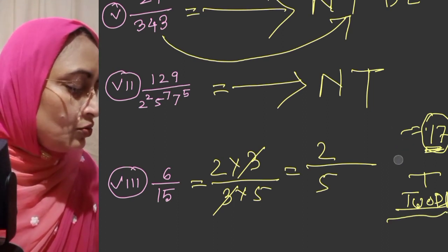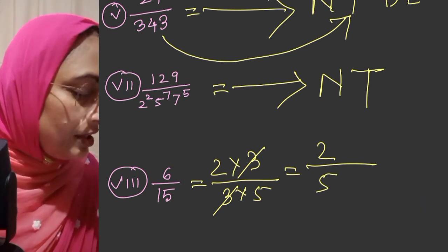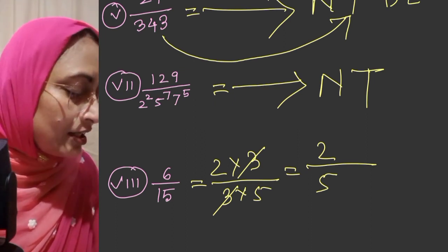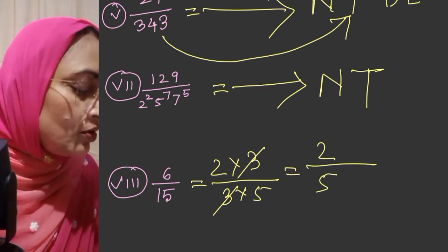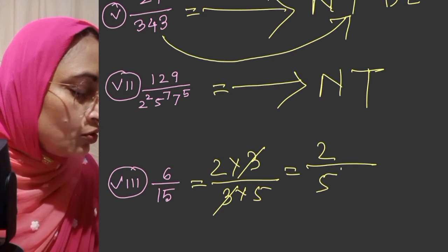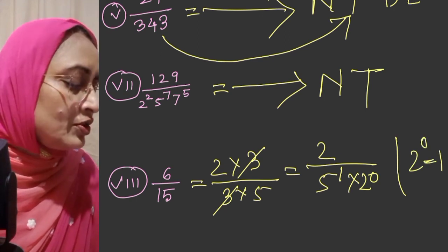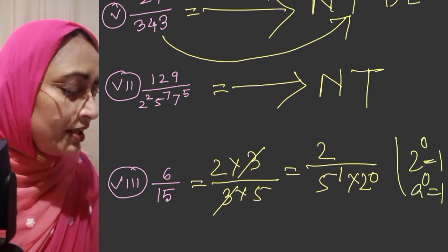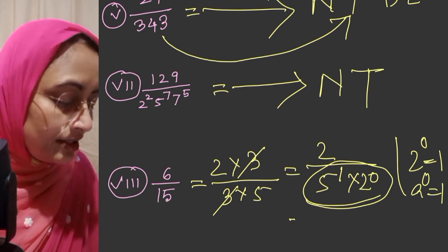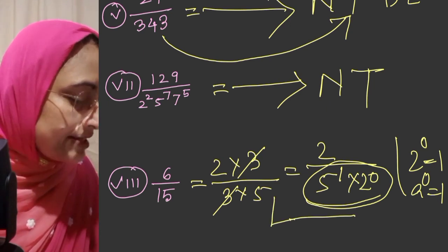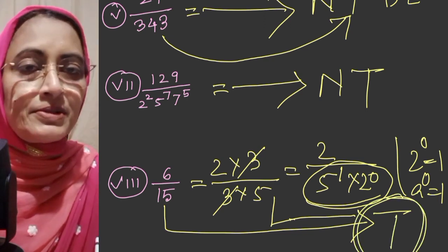We can state: after how many decimal places will the denominator terminate? This equals 2 by 5. We can write the denominator as 5 to the power 1 into 2 to the power 0 — and since 2 to the power 0 equals 1, anything to the power 0 is 1. Therefore the denominator can be written in the form 2 to the power m into 5 to the power 1. That means this rational number has a terminating decimal expansion.